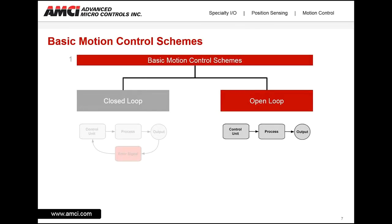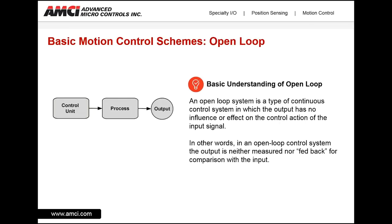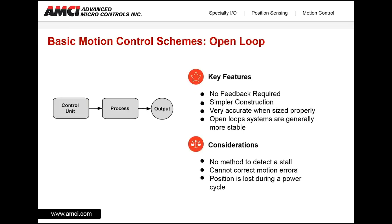Now let's take a look at an open loop system. An open loop system is a type of continuous control system in which the output has no influence or effect on the control action of the input signal. In other words, in an open loop control system, the output is neither measured nor fed back for comparison with the input. Some of the key features of an open loop system are: there is no feedback required, which in turn leads to a simpler construction.